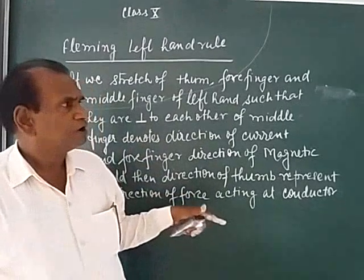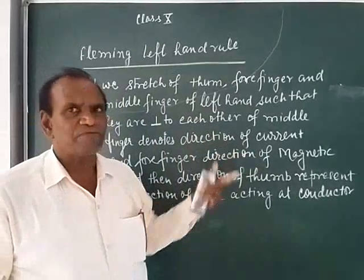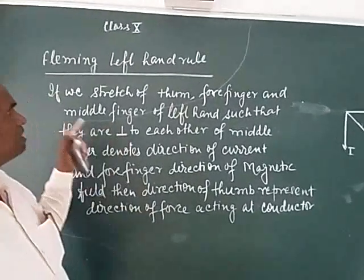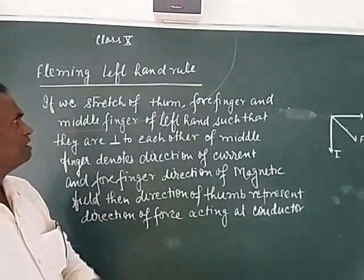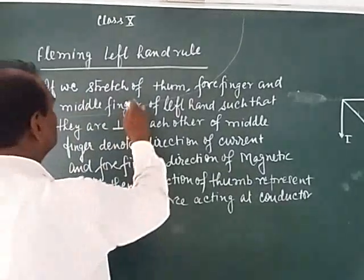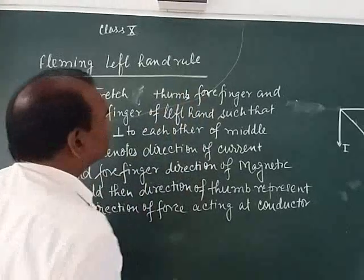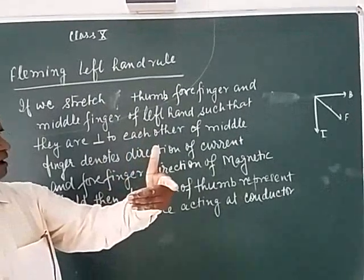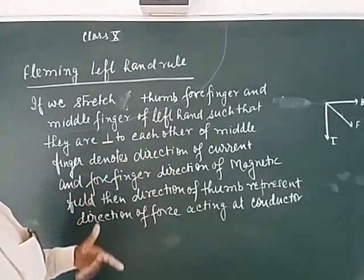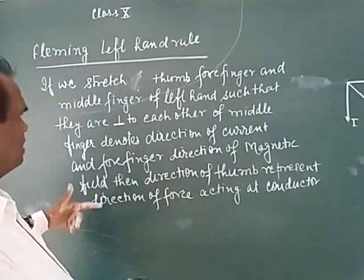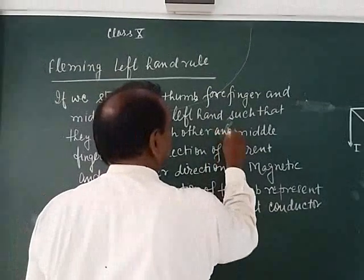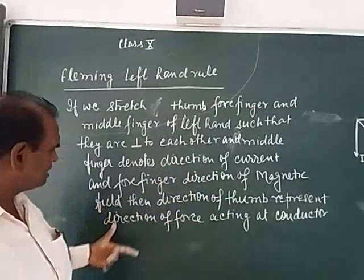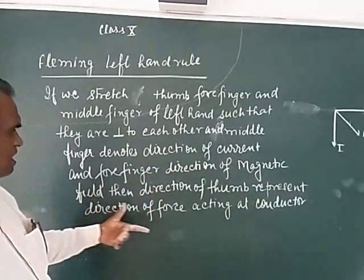Fleming's left hand rule gives us the direction of force acting on a current-carrying conductor placed in a magnetic field. According to this rule, if we stretch the thumb, forefinger, and middle finger of the left hand such that they are perpendicular to each other, and the middle finger denotes the direction of current, the forefinger denotes the direction of magnetic field, then the direction of the thumb represents the direction of force acting on the conductor.